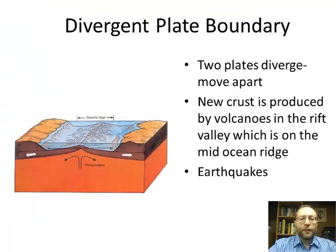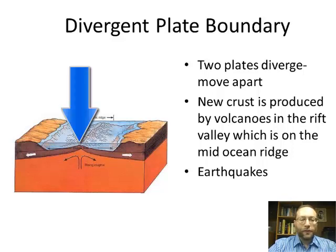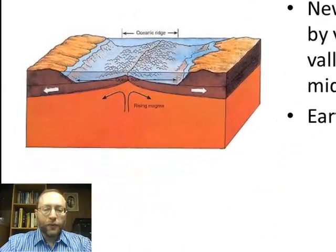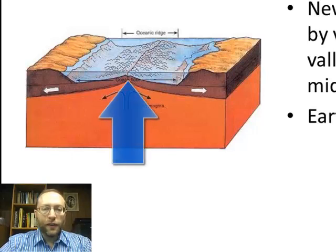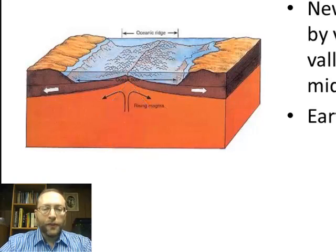A divergent plate boundary is where two plates diverge or move apart, and in the center, new crust is produced. In a convergent boundary, crust is destroyed or recycled. At divergent boundaries, parts of the mantle become part of the crust, so new crust is made. In the Atlantic Ocean, right through the center of it, there is the longest mountain chain in the world — the Mid-Atlantic Ridge. It runs along the whole length of the Atlantic, between North America and Europe, and South America and Africa.